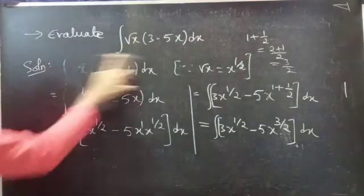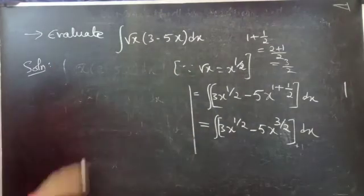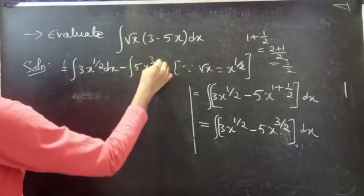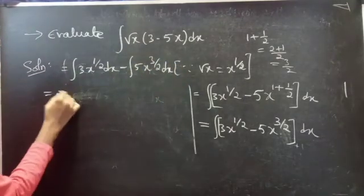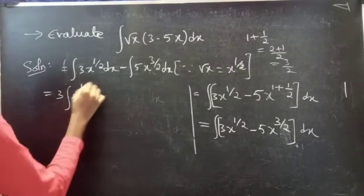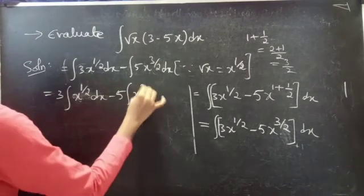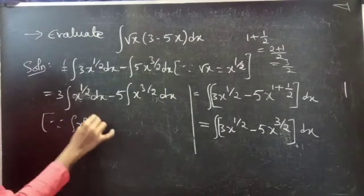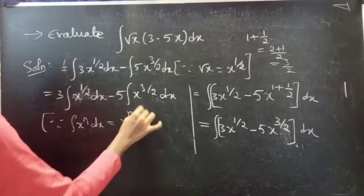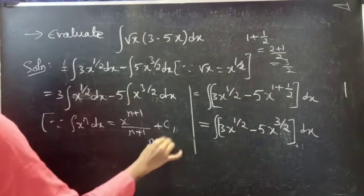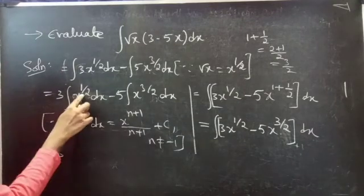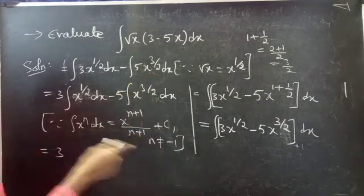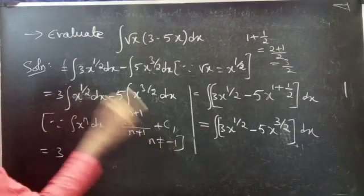So this equals to the integral of 3 into x to the power 1 by 2 dx, minus the integral of 5 into x to the power 3 by 2 dx. Taking constants outside the integral: 3 into integral x to the power 1 by 2 dx, minus 5 into integral x to the power 3 by 2 dx. Since the integral of x to the power n dx equals x to the power n plus 1, divided by n plus 1, plus c, for n not equals to minus 1.